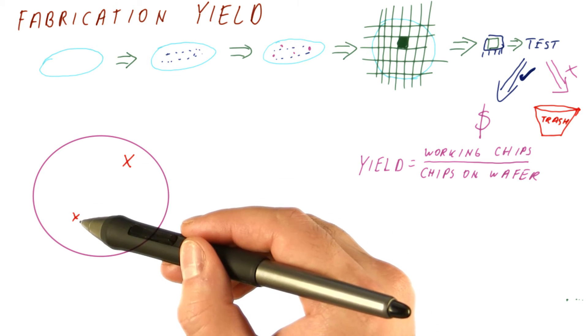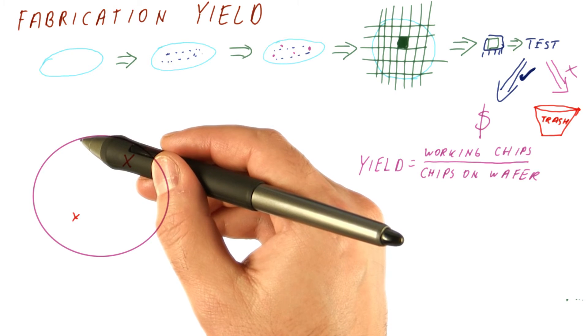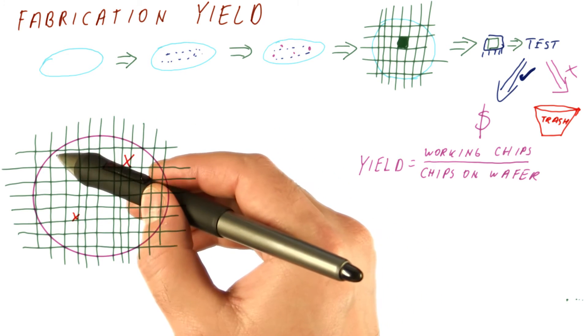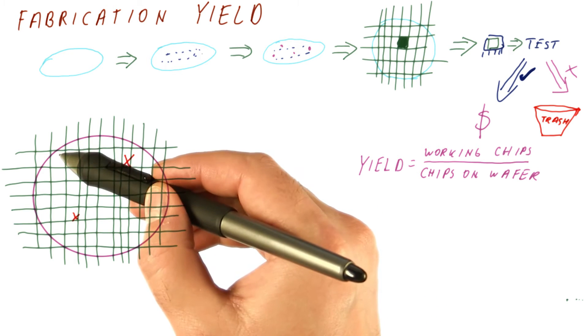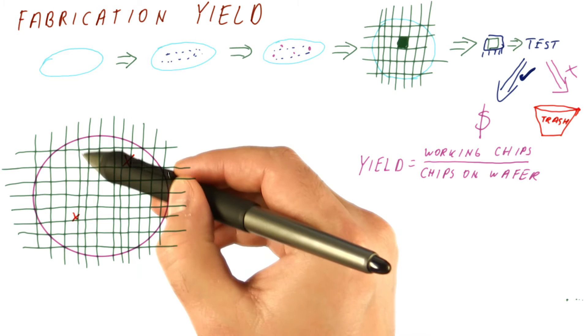Let's say that this wafer has two defects. Let's say that we divide this wafer into a lot of small chips. Note that some of the chips are not really complete because of the wafer roundness. We can only use the complete ones.